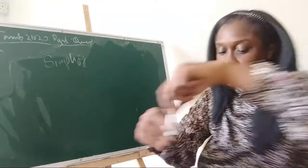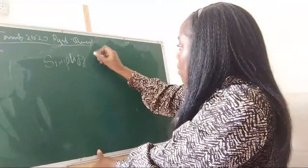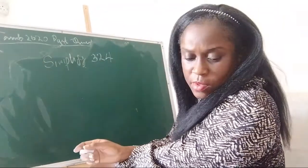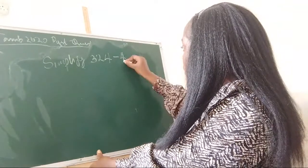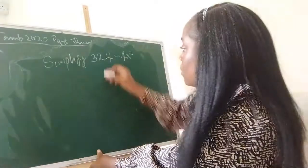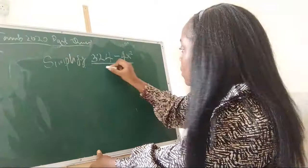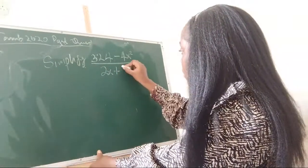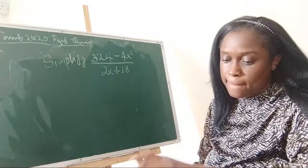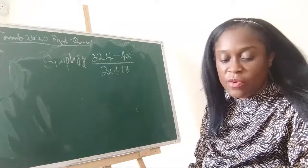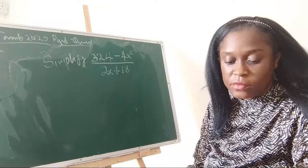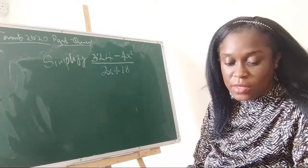Simplify: 324 minus 4x squared, all over 2x plus 18. That is the expression for question 12.